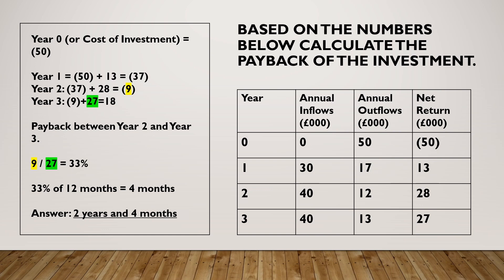Year 1 is £13,000, so at the end of Year 1 you started at minus 50 and add on 13, leaving you at minus £37,000 — so you haven't paid it back. Then Year 2 is a good year: £28,000 added to negative £37,000 leaves you at negative £9,000. At that point you still have not paid back the cost of the investment.